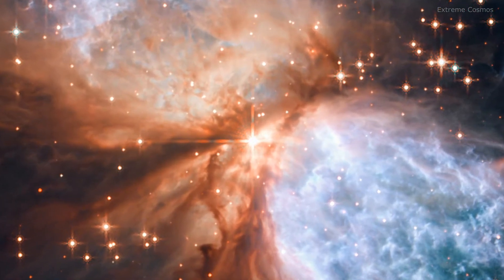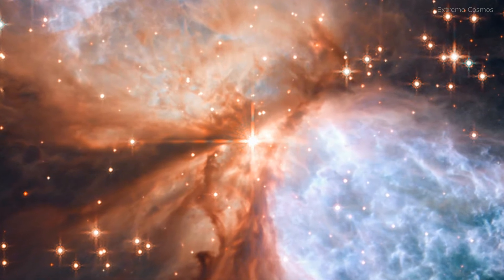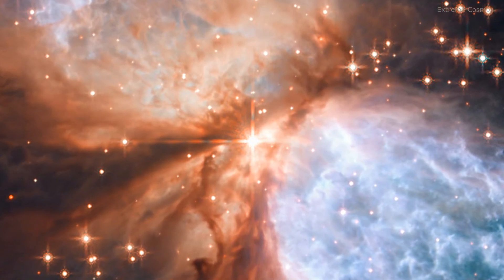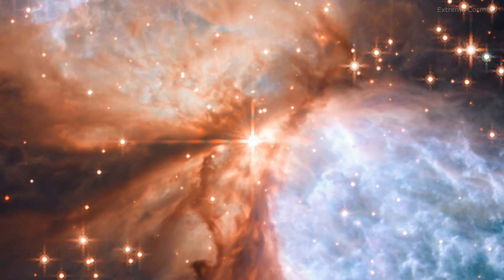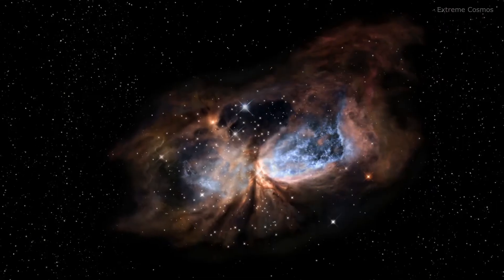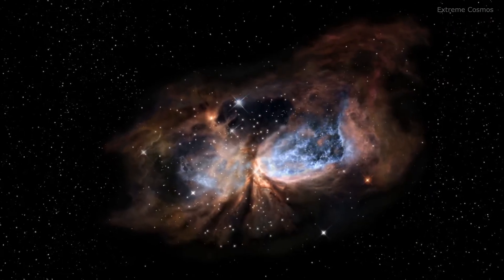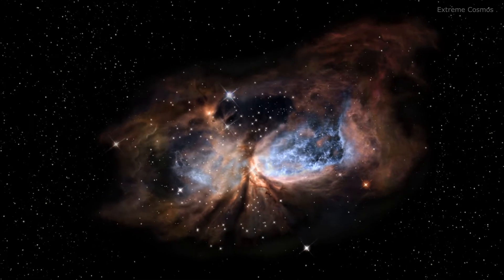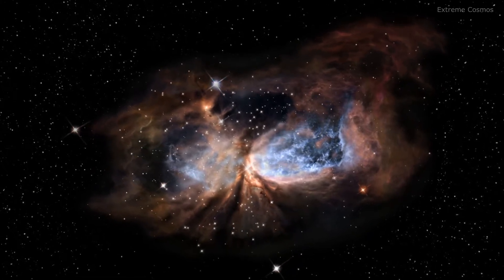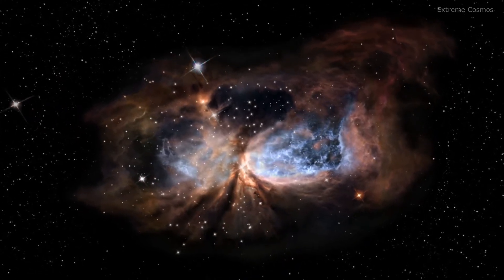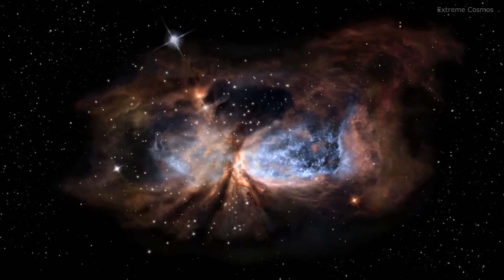Despite the celestial colours of this picture, there is nothing peaceful about this scene. A young star, named S106IR, is being born at the heart of the nebula. In the violent final stages of its formation, the star is ejecting material at high speed, violently disrupting the gas and dust.